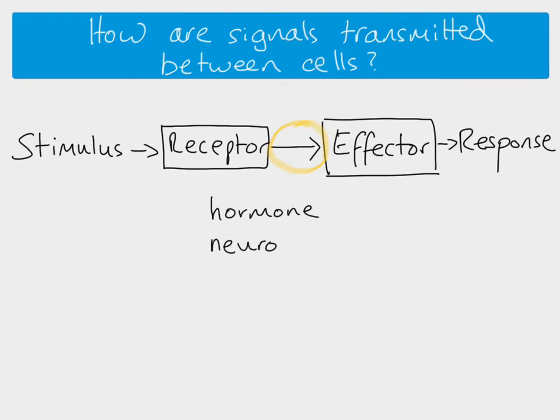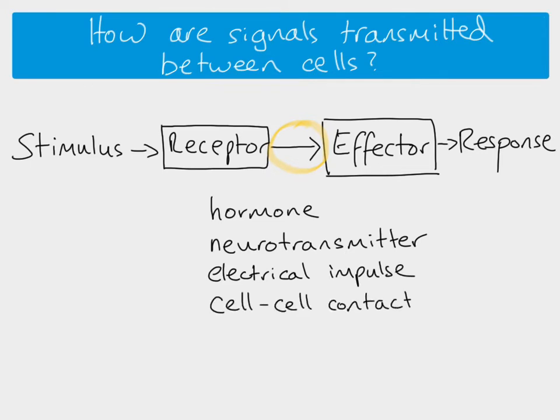It could be a hormone, we could have a neurotransmitter which is how the signal is transmitted to the effector, there could be an electrical impulse, and it could even be cell to cell contact, which we see particularly when an embryo is developing.